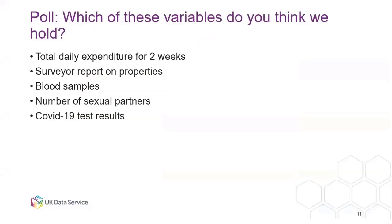Now there's a poll on screen: which of these variables do we hold? Total daily expenditure for two weeks, surveyor reports, blood samples, number of sexual partners, and COVID-19 test results — you can choose more than one. The answer is that all of these appear on some of our surveys. Total daily expenditure for two weeks is from the Living Costs and Food Survey, where people keep a food diary of everything they buy over a two-week period.